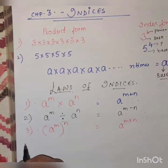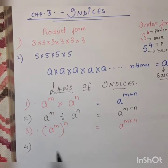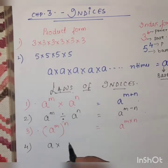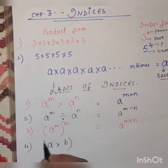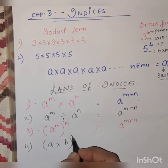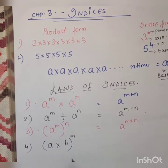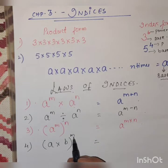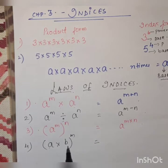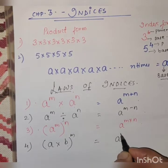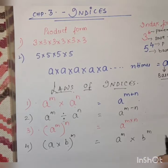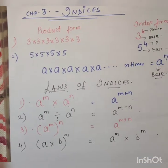Next is two different bases. Until now we were taking the same base. Now we have two different bases but the same power inside a bracket. The power goes to both bases. So it becomes A raised to M into B raised to M.